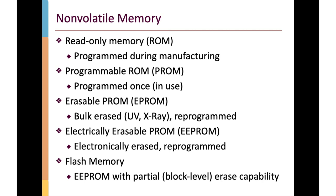Here's a historical perspective on non-volatile memory. The oldest type is called Read-Only Memory, or ROM. A ROM contains a program to be executed by the processor that's there when power comes on. In its original form, ROM required programming during manufacture — meaning the bits making up the assembly language for that program were transferred onto the ROM device at manufacturing time. Because it's programmed at manufacturing time, if you need to make a change to the boot code, you have to physically manufacture new ROM chips, which is time-consuming and expensive.